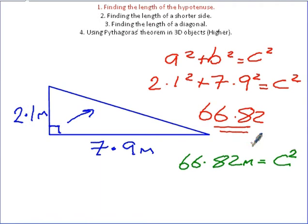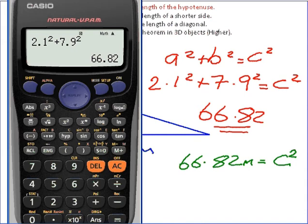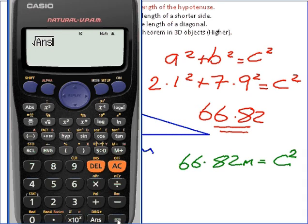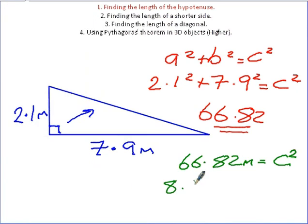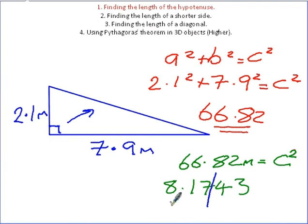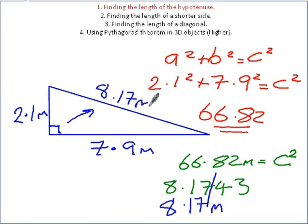I'll get my calculator up. This is the square root button. I press the square root button and then the answer button. That equals 8.1743. In an exam, they'll normally ask you to round to two decimal places. Find your place, draw your line, look next door. This isn't five or greater, so I don't need to add one more. So my answer is 8.17 metres. That makes much more sense — 8.17 metres is the length of the hypotenuse.